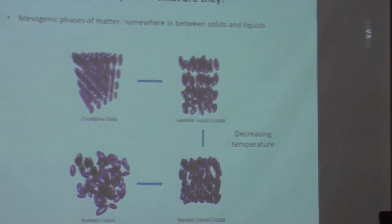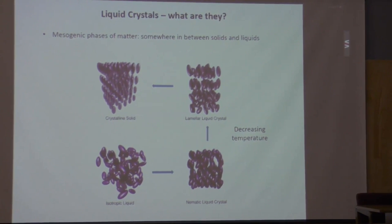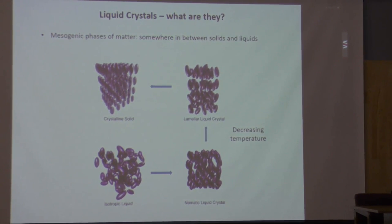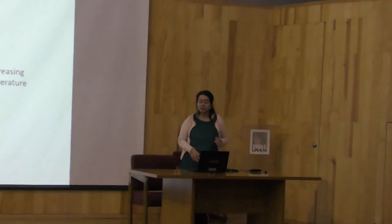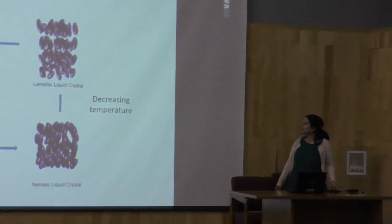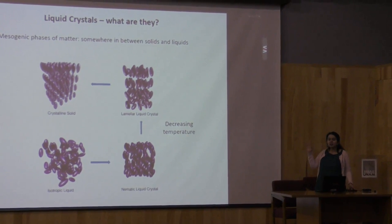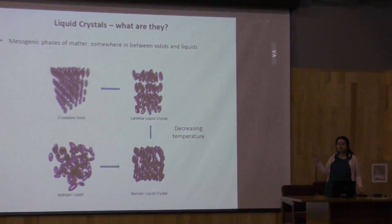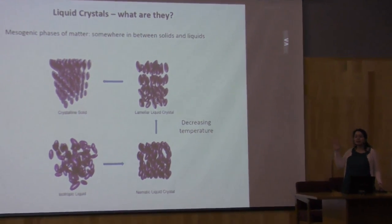The first question is: what are liquid crystals? As the name suggests, they are materials somewhere between liquids and solids — more ordered than a liquid but less ordered than a solid. Looking at the slide, I have a schematic phase transition between an isotropic liquid like water and a crystalline solid. The liquid is at the bottom left, the solid at the top left, and the transition proceeds via two intermediate liquid crystalline phases on the right.